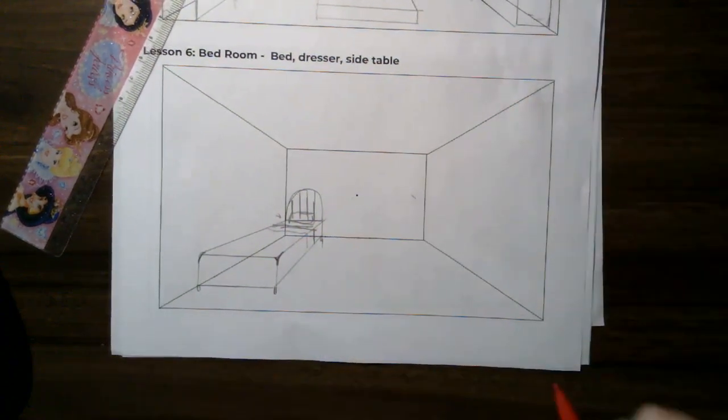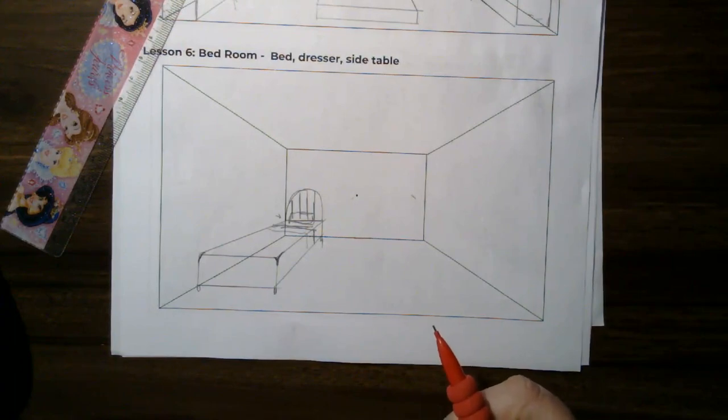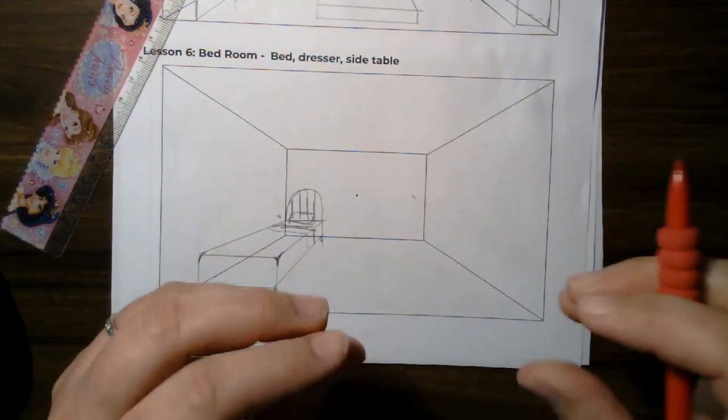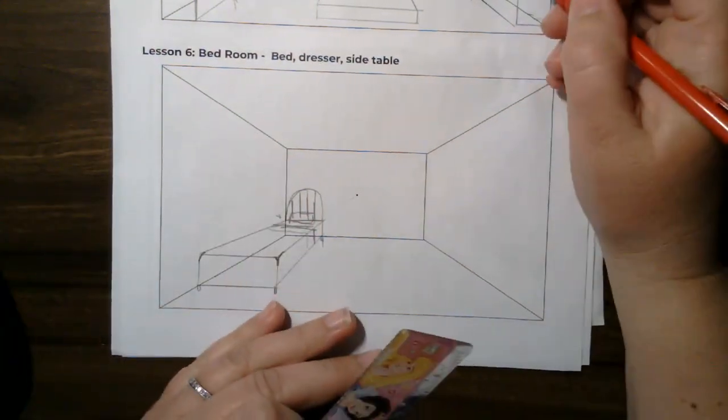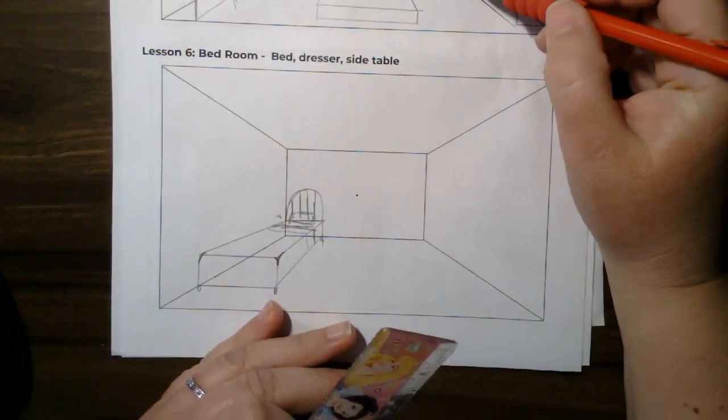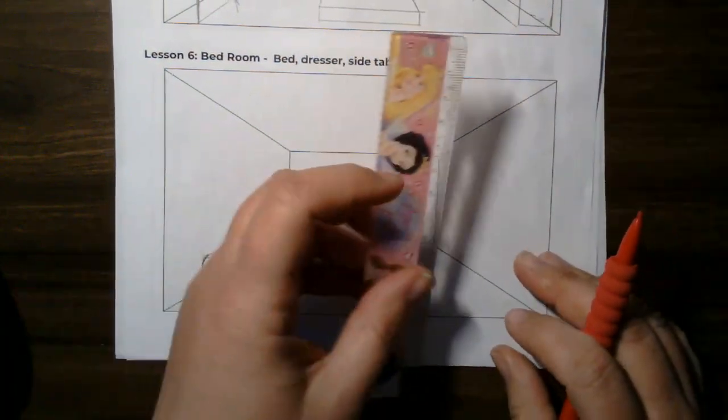All right, so for this lesson we're going to be doing dresser, but we're going to be doing two different dressers. One is going to be a small one and the next one's going to be a little bit larger. So how we're going to do this is we're going to build similar to the ones that we did, but we're going to build the back one first before the front one.